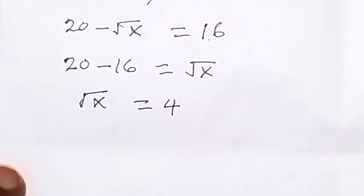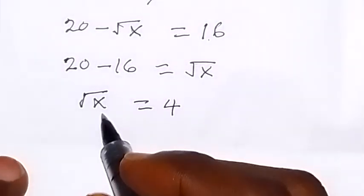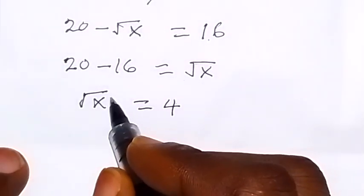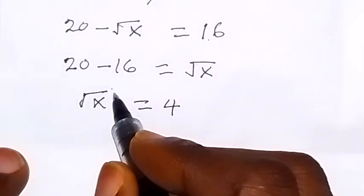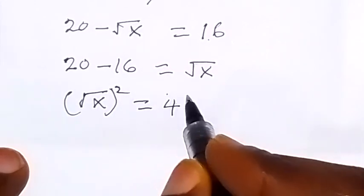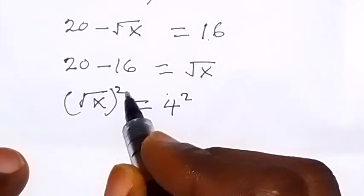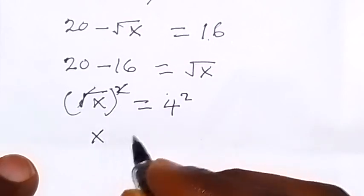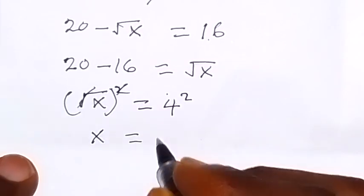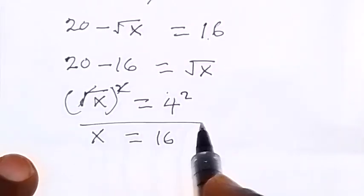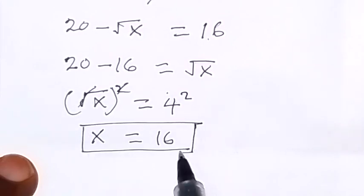Since we are finding x, let's square both sides. Squaring both sides: the square cancels the square root, and therefore x is equals to 16. So the value of x is 16.